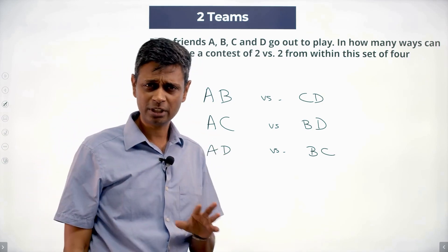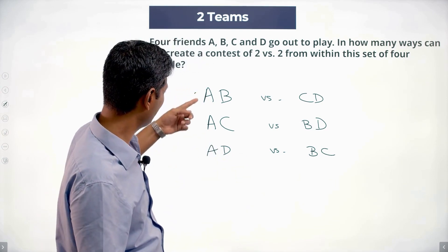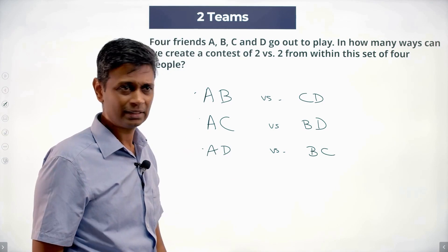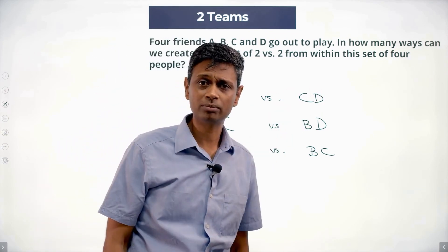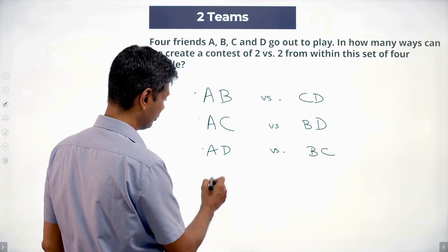Or what are we saying? From four, select some two: A, B, A, C, A, D. The other two automatically form the opponent pair. A, B, A, C, A, D. You could select B, C, B, D, C, D.